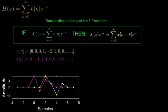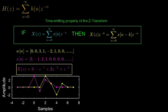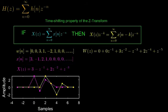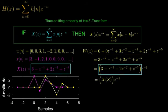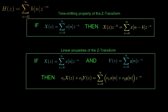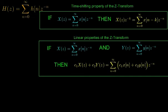Taking the Z transform of x of n gives the result of 3 minus z to the power of minus 1, plus 2 times z to the power of minus 2, plus z to the power of minus 3. Taking the Z transform of W[n] then gives the result of 3 times z to the power of minus 2, minus z to the power of minus 3, plus 2 times z to the power of minus 4, plus z to the power of minus 5, which is equivalent to X(z) times z to the power of minus 2. We can use these properties of linearity and time shifting to analyze the difference equation of a system using the Z-transform.